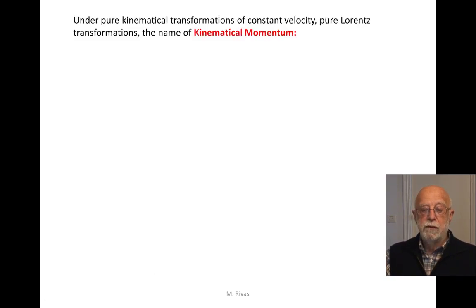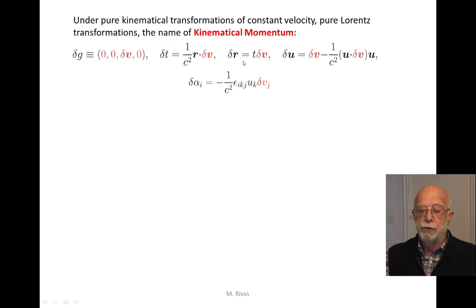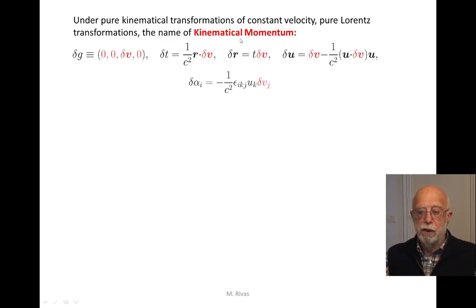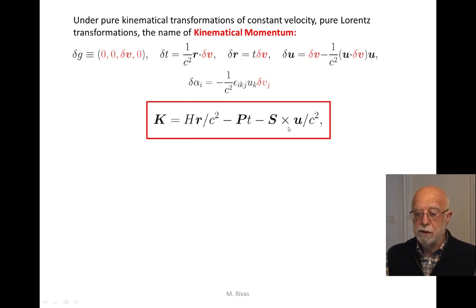Under pure kinematical transformation — that is, under Lorentz boost of parameter delta-v, infinitesimal velocity — all kinematical variables transform: time, position, velocity, and the orientation angle of the frame associated to the particle. We give the name kinematical momentum K because the parameter is a velocity. K equals the Hamiltonian times its function, minus the first conjugate momentum times T, minus the second conjugate momentum times its factor, minus the third conjugate momentum times its part — yielding a linear relationship involving H and P.